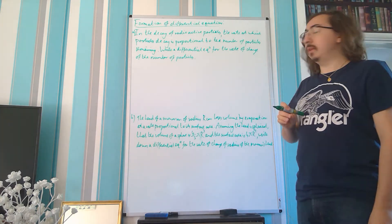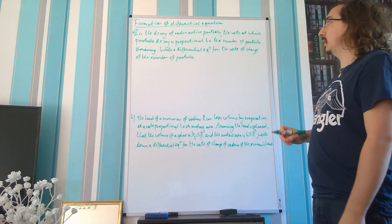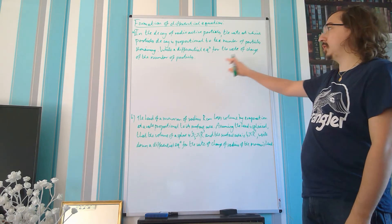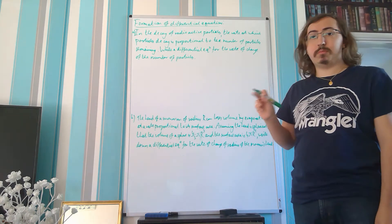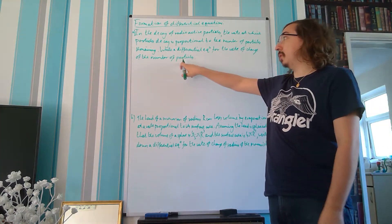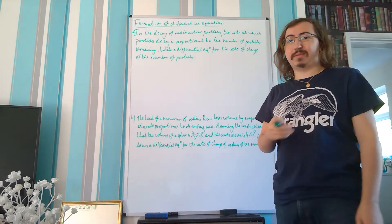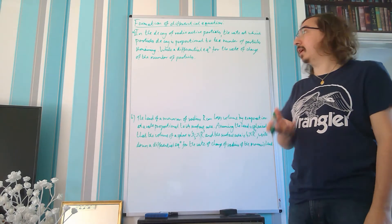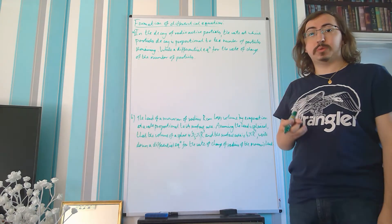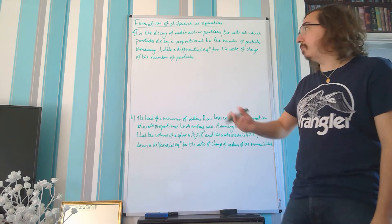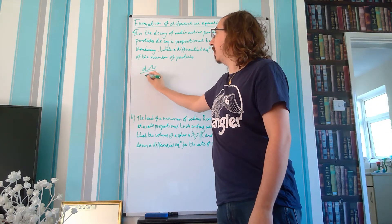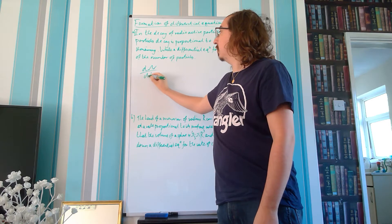Let's have a look at what the actual differential is. We want to write a differential equation for the rate of change of the number of particles. The thing that's going to change is our number of particles, so let's give that the letter N — capital N, typically for number. It's a rate, so it changes with respect to time, giving us dN/dt.